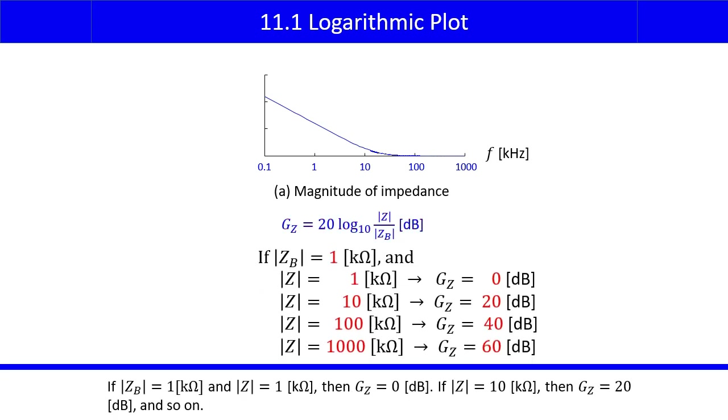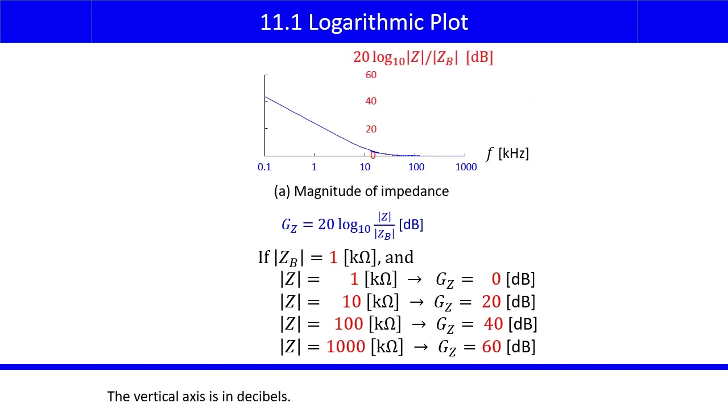If the magnitude of ZB equals 1 kilo-ohm, and the magnitude of Z equals 1 kilo-ohm, then GZ equals 0 decibels. If the magnitude of Z equals 10 kilo-ohms, GZ equals 20 decibels, and so on. The vertical axis is in decibels.